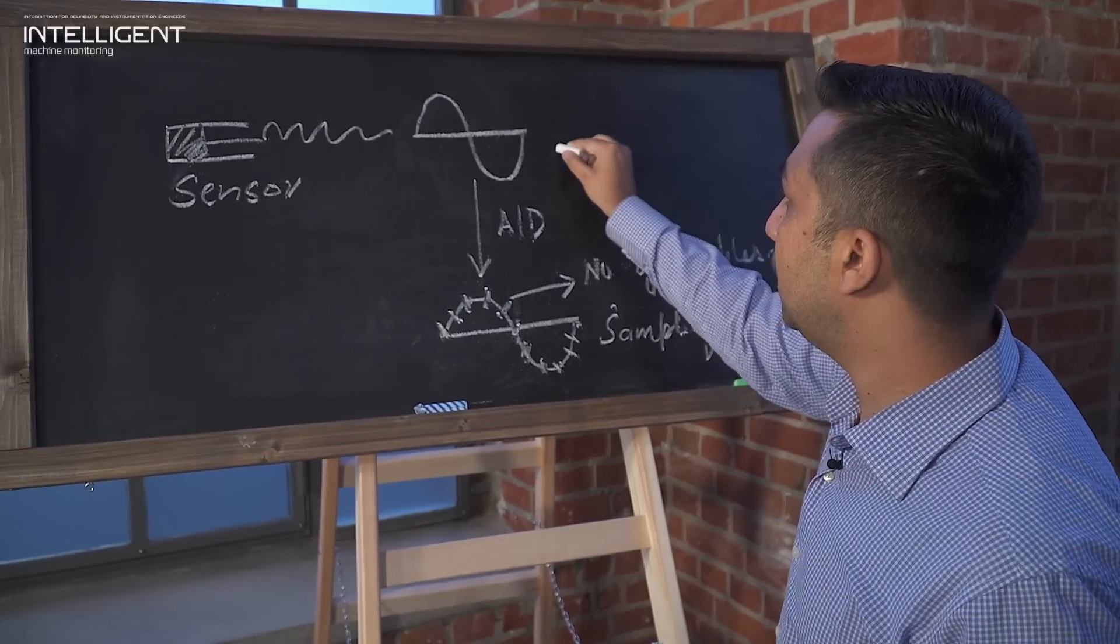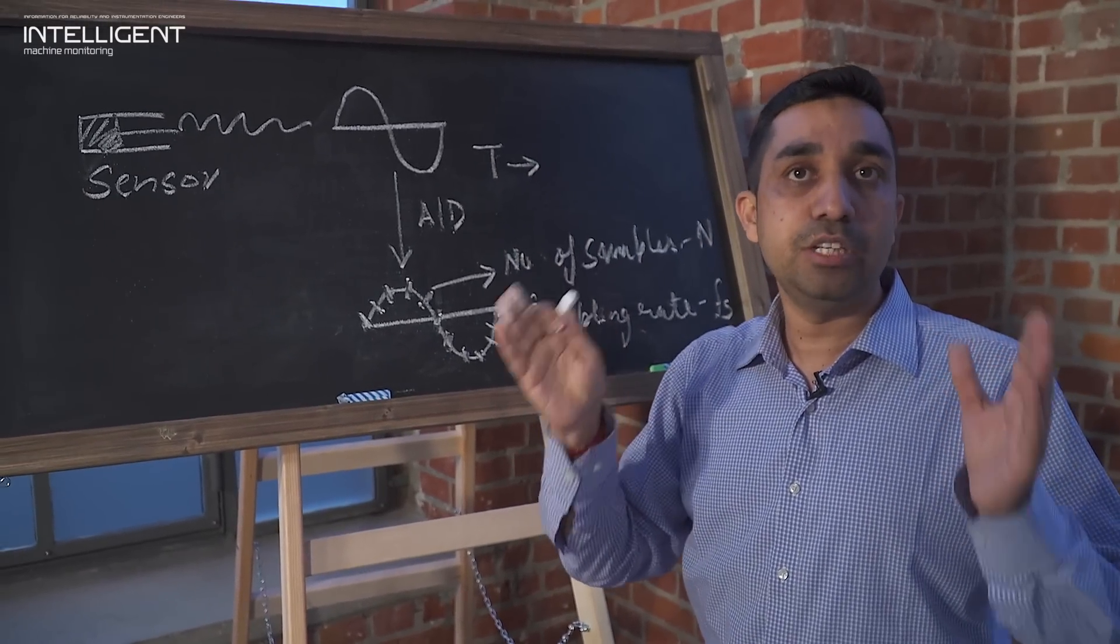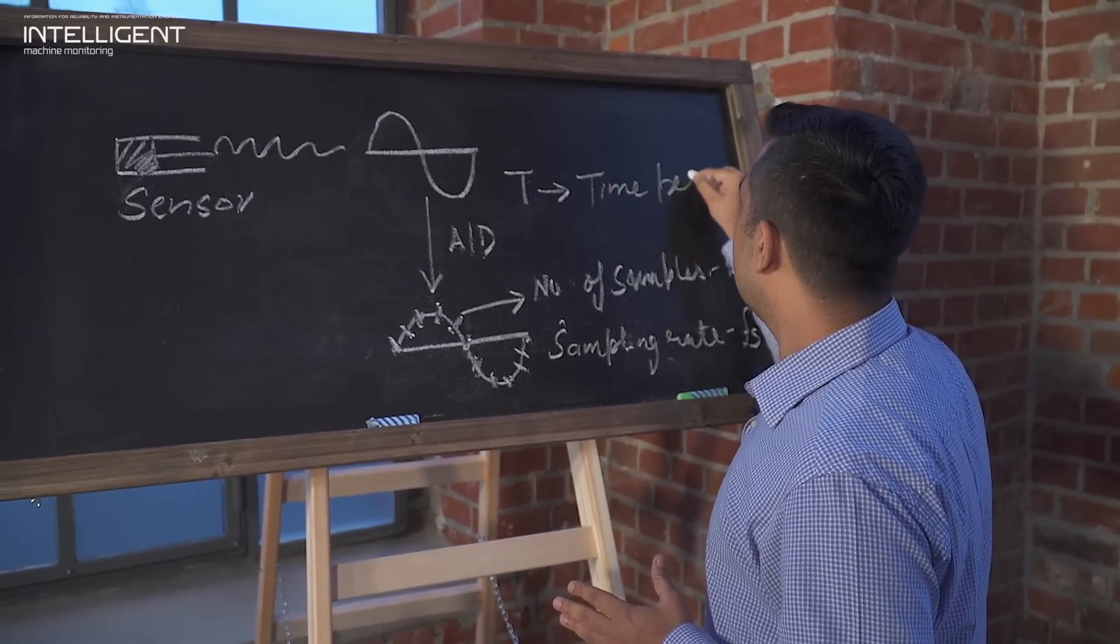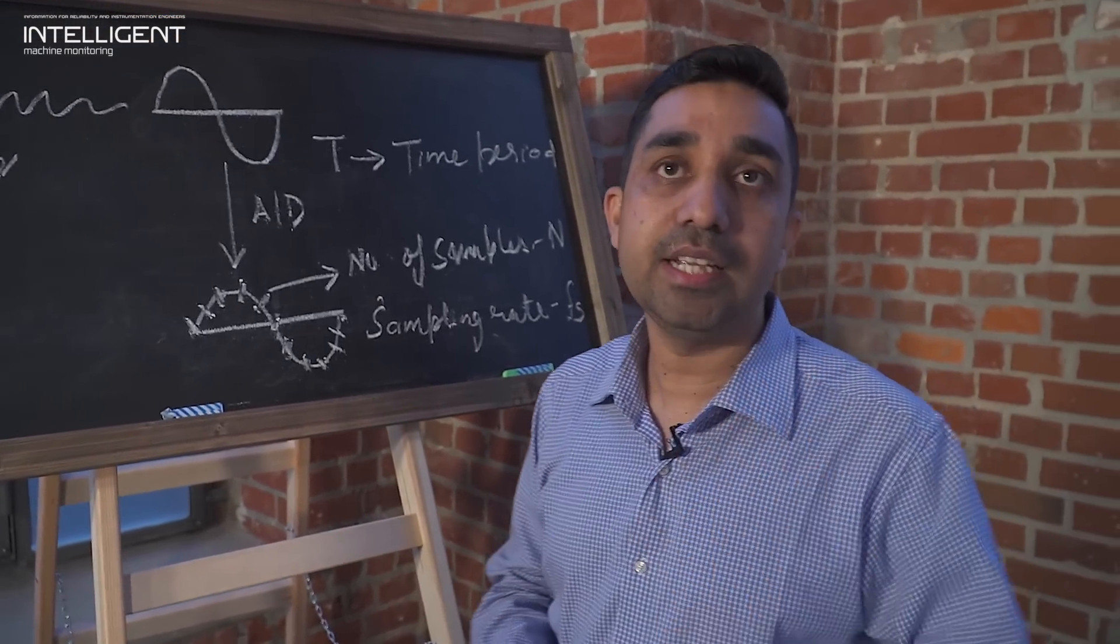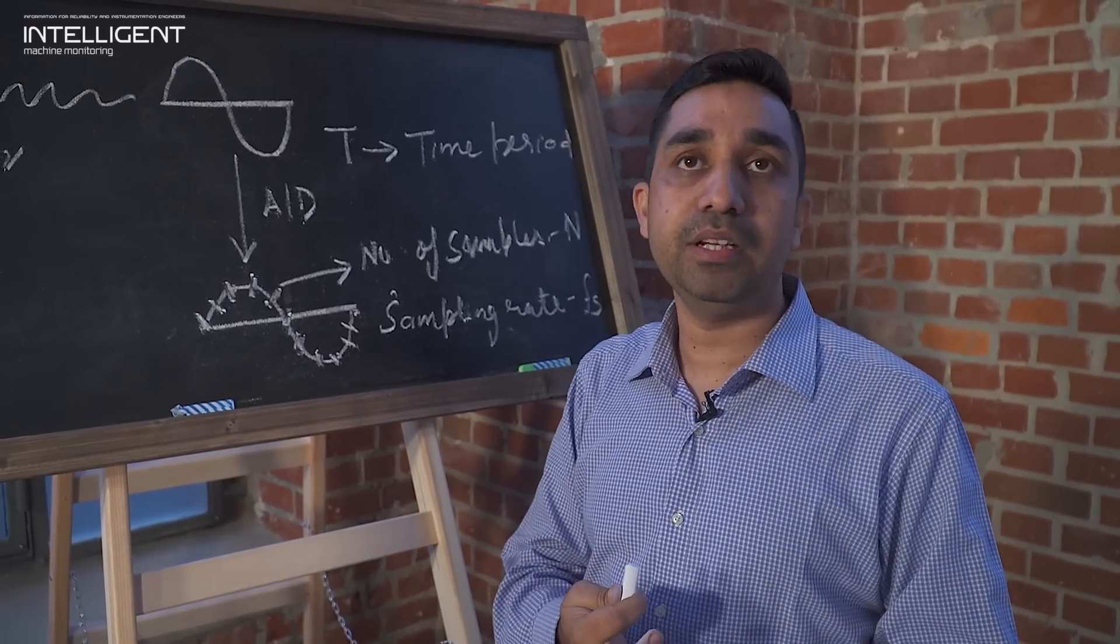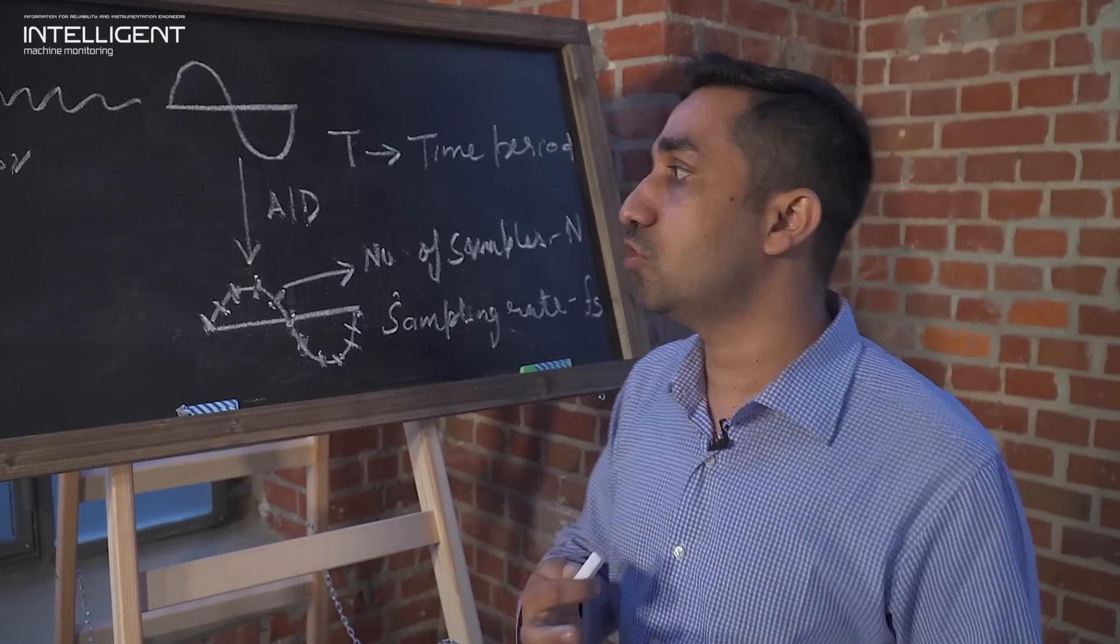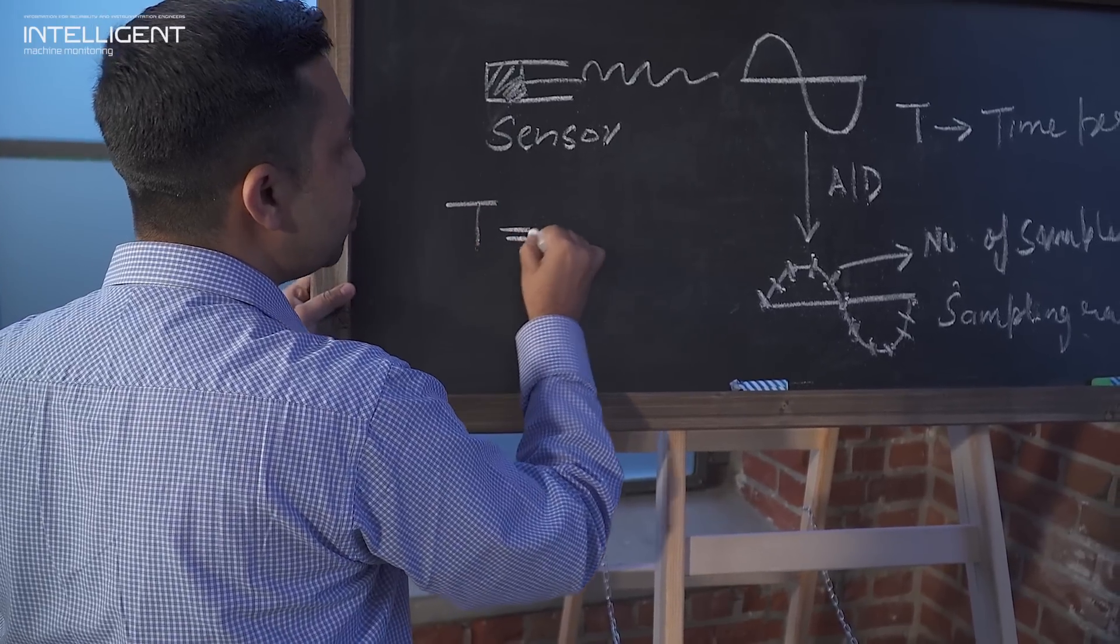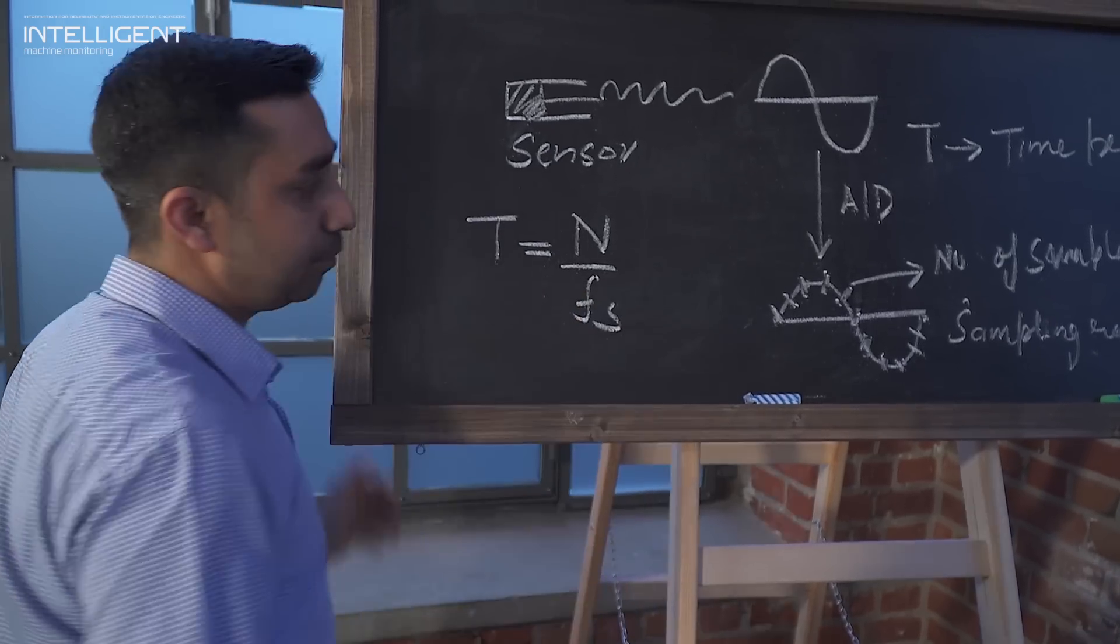So now, we have two parameters for time signal. One is number of samples, these discrete points, and the sampling rate, how often or how fast these points have been captured. And the third parameter is a time frame or a time window. Time period in time domain. So, we have three parameters in time signal: time period, number of samples, and sampling rate. And these all three parameters share a relationship. T equals number of samples divided by sampling rate.